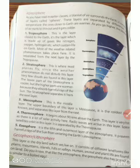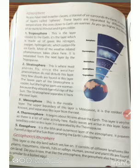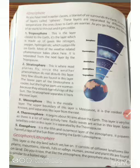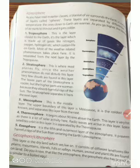The thermosphere begins about 90 km above the Earth's surface. This layer is very hot as there is a lot of solar activity here. Radio waves are active in this layer, and space satellites orbit within it. It is separated from the next layer by the thermopause.